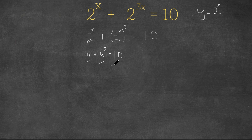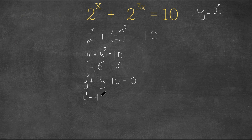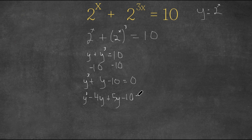Now we're going to subtract 10 on both sides. Let me rewrite this in order of exponents. We have y to the power of 3 plus y minus 10 equals 0. To factor this, we're going to rewrite the y as minus 4y plus 5y, and we still have the minus 10 here. And this equals 0.